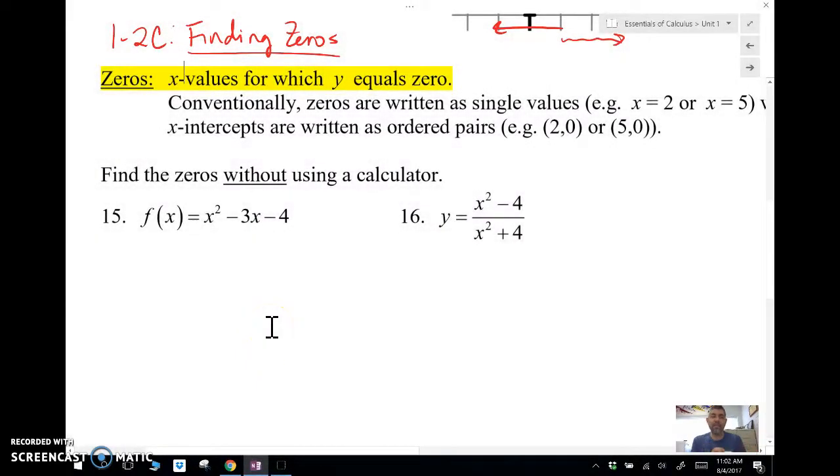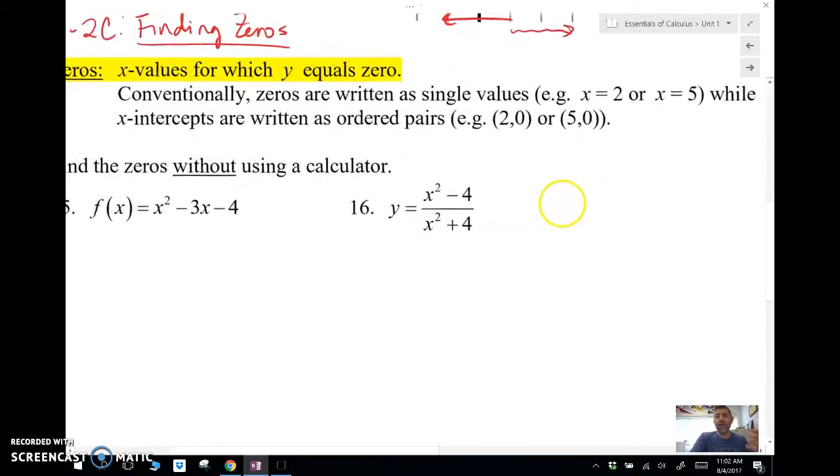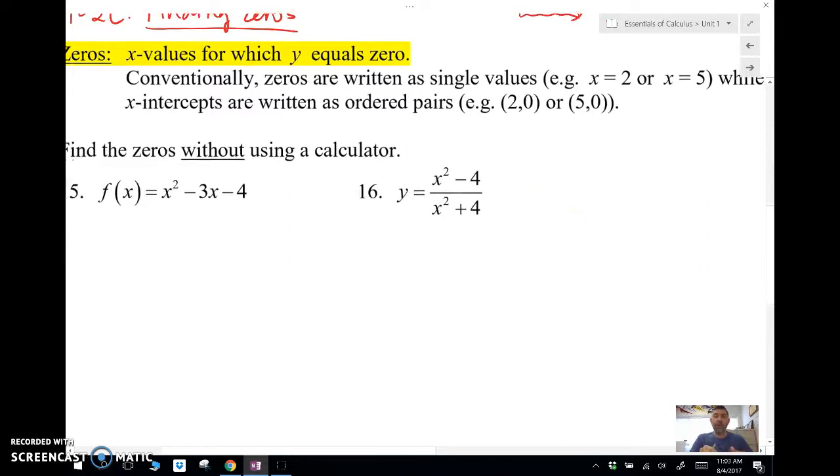We've got finding zeros without using a calculator. Zeros are written using single values, x equals 2 or x equals 5. However, when we're looking at x-intercepts, those are written using ordered pairs, (2,0) or (5,0). It's very important that you understand the difference between those.